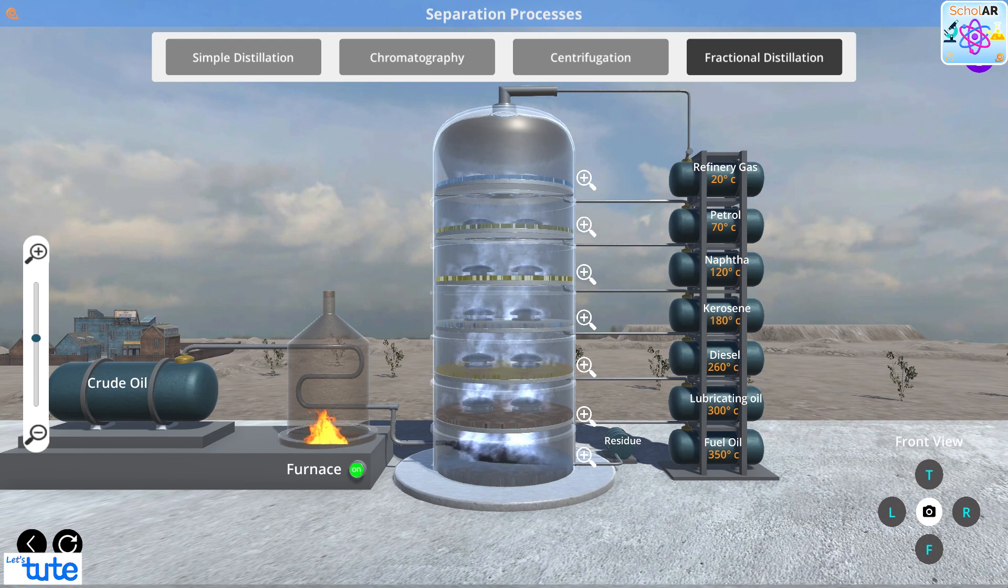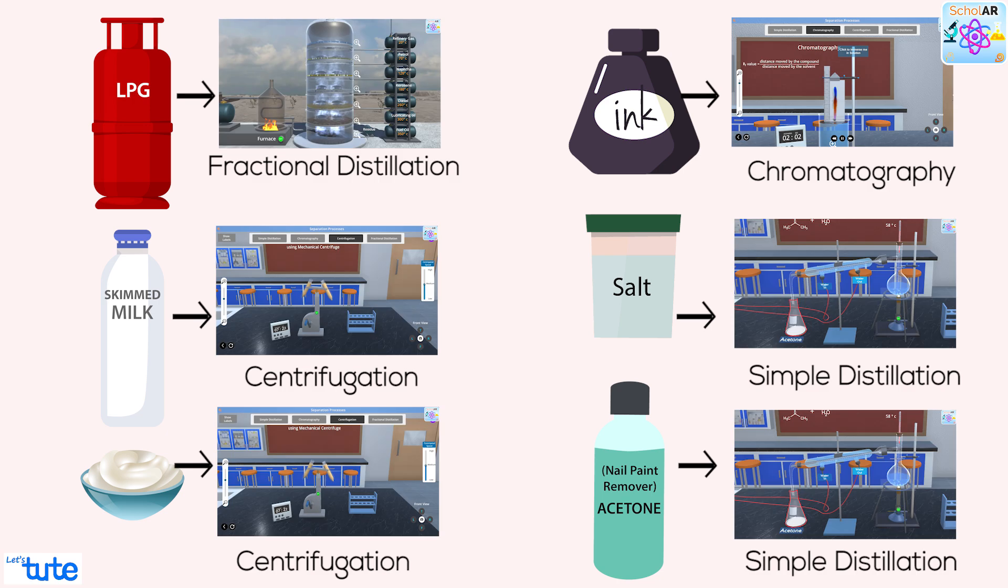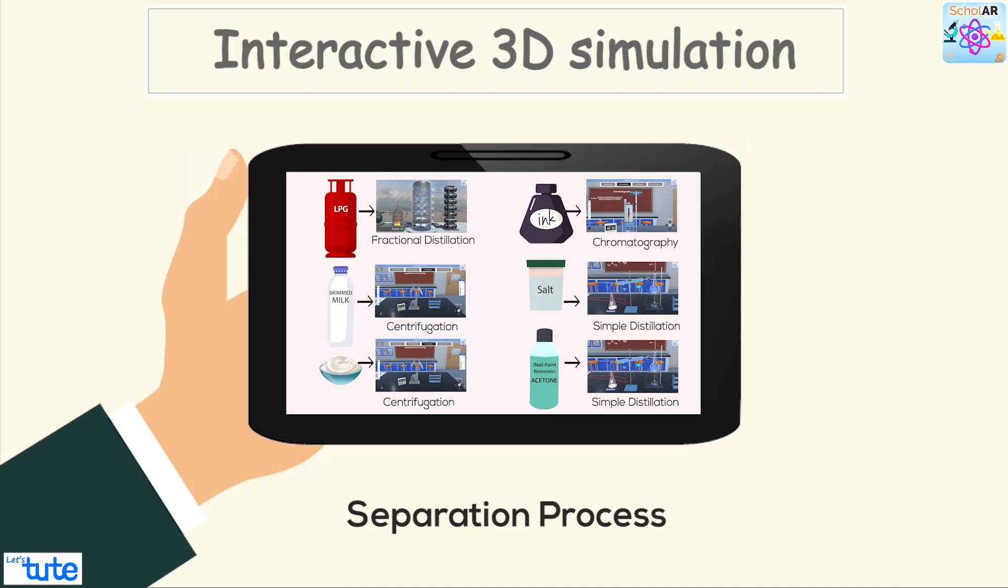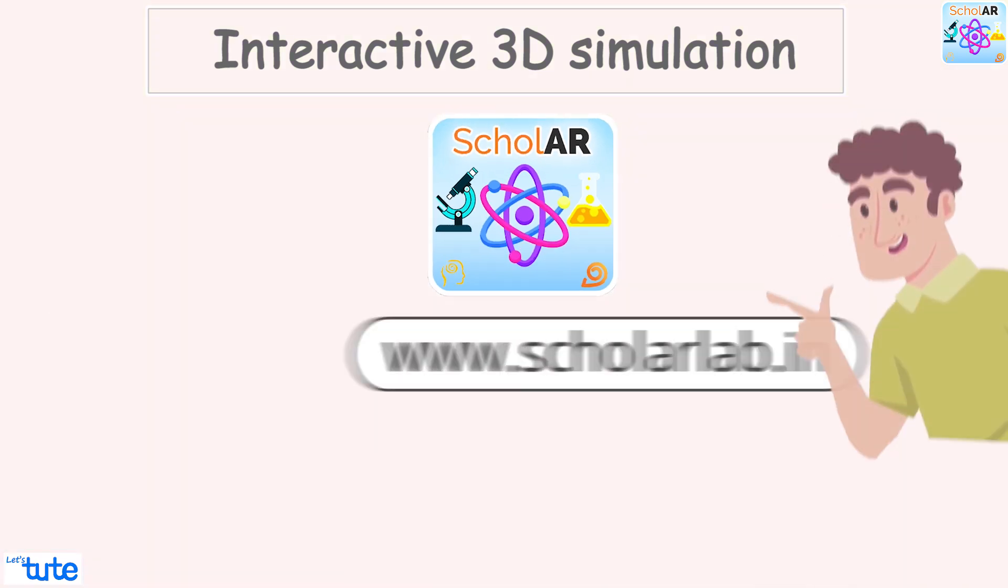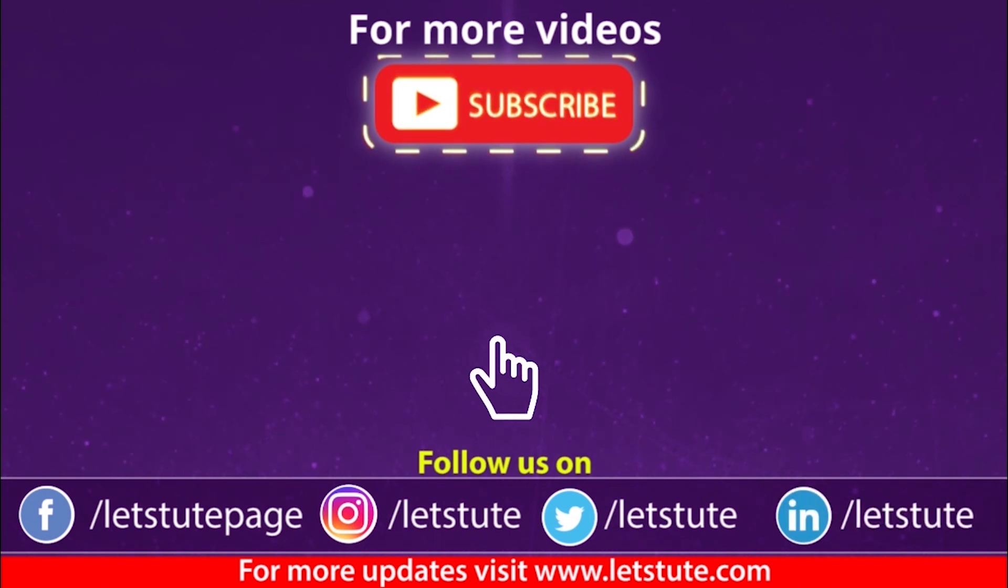Well, we may feel the objects that we use in daily lives are very easily available. But after understanding the separation process, we are sure that you know that it isn't very easy to actually obtain these products. Well, I hope you have enjoyed this session. This session is based on an interactive 3D simulation called Scholar. Visit www.scholarlab.in to request a download of the software application to try this out for yourselves. If you have liked this video, then hit the like button, comment on any queries and yes, subscribe to our channel for more such videos. Also, don't forget to hit the bell icon and never miss another update from Let's Tute. Till then, keep watching, keep learning and follow your curiosity. Thank you.